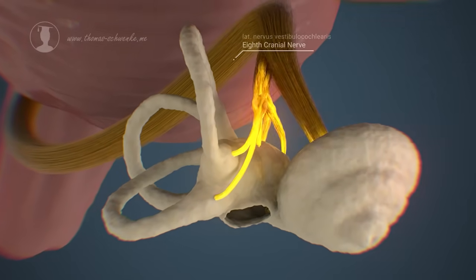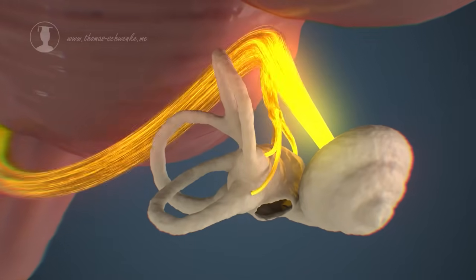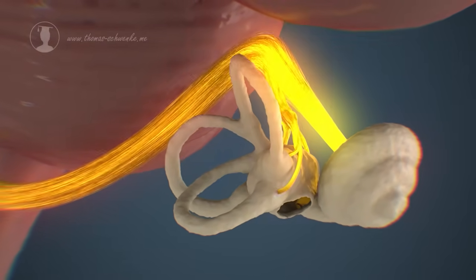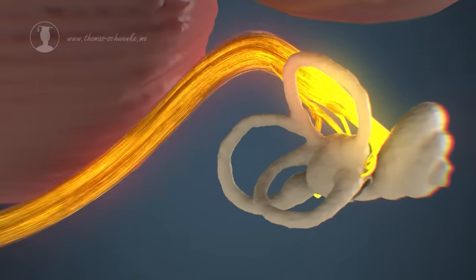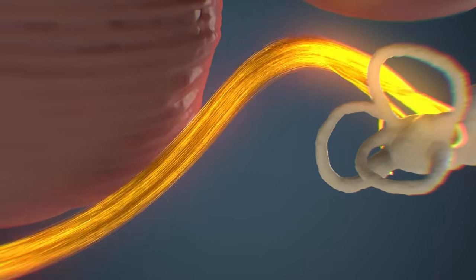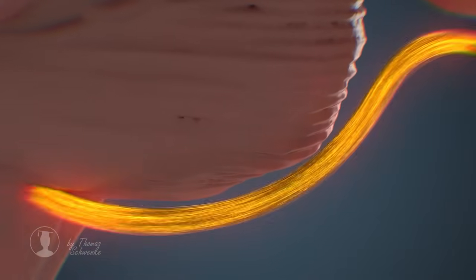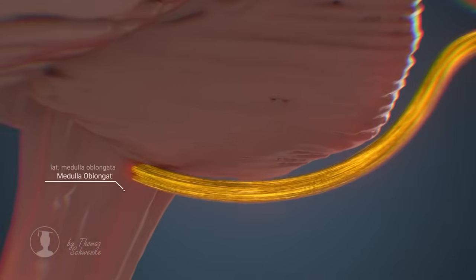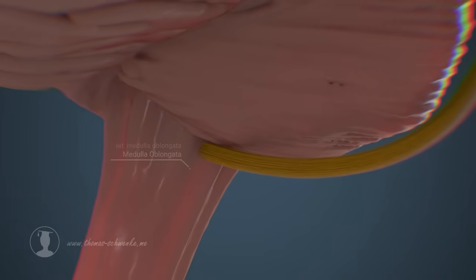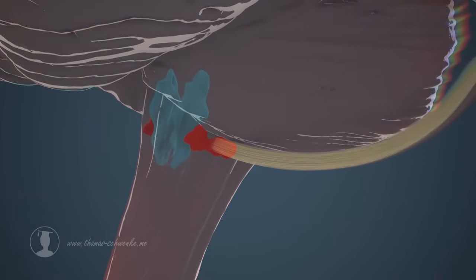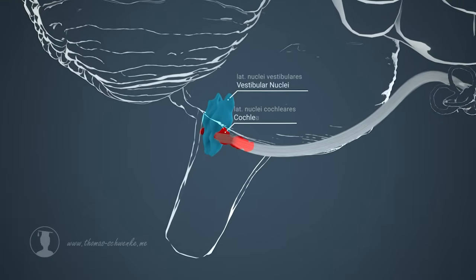As already mentioned, the action potentials produced by the hair cells are sent to our brain via the vestibulocochlear nerve. The electrical signals first reach certain nerve cells located in the medulla oblongata. Scientists refer to the collection of these nerve cells as nuclei. The signals from the vestibular system are processed by the vestibular nuclei, and the signals from the cochlea by the cochlear nuclei.